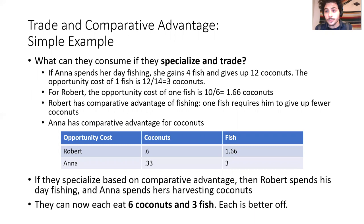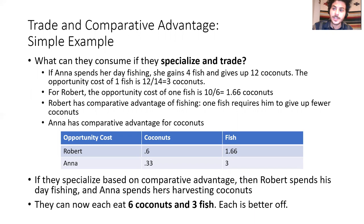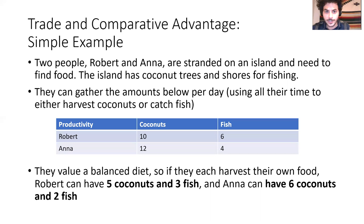Now let's see what happens if they specialize and trade. We want to determine who has the comparative advantage in each sector. Before getting to comparative advantage, let's define absolute advantage. Anna is better at harvesting coconuts—she gets 12 per day versus Robert's 10—so she has the absolute advantage in coconuts. Robert has the absolute advantage in fishing, getting 6 versus Anna's 4.